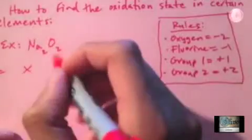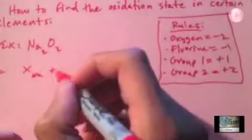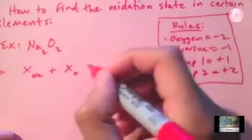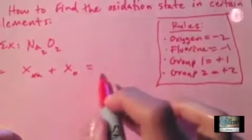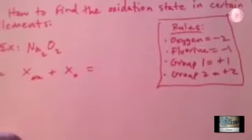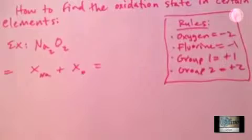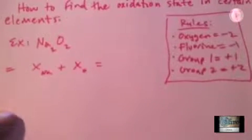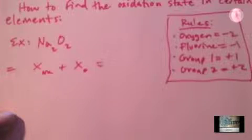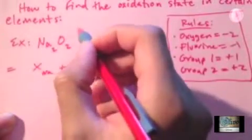You go X subscript Na plus X subscript O. Now this part of the equation is not arbitrary, this is determined by whatever is on top. Let me get a pencil so you can see this. This is where some common mistakes occur.